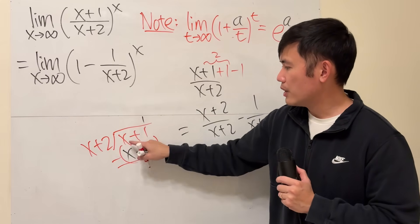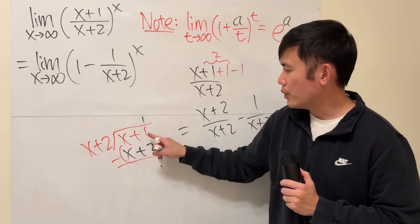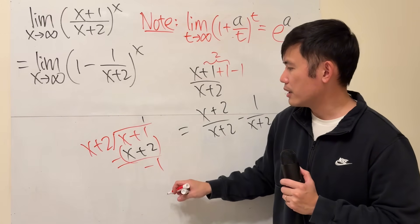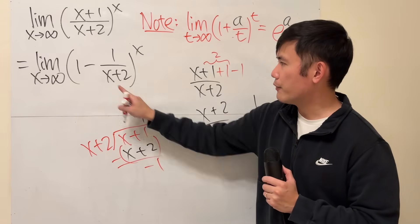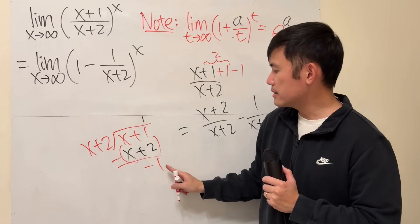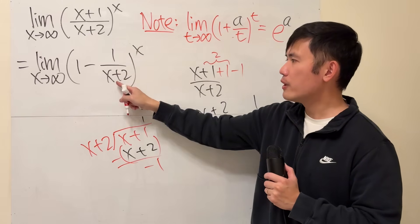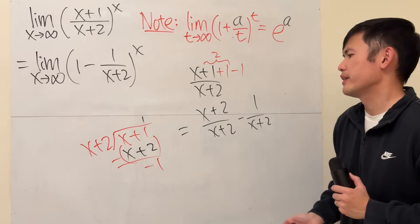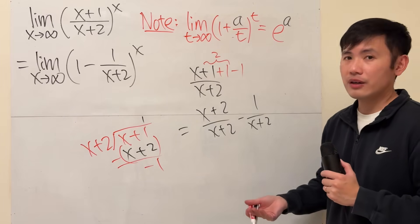And you subtract, x minus x is 0, 1 minus 2, we get negative 1. This right here tells you we have 1 minus 1 over the original denominator. So, whichever way that you find more convenient.